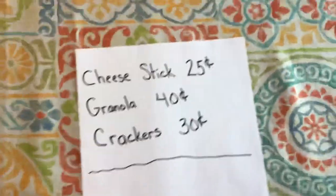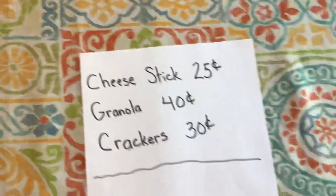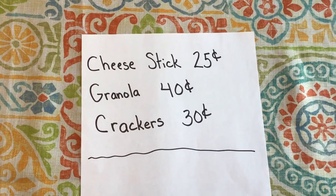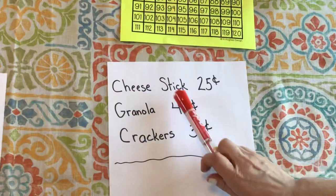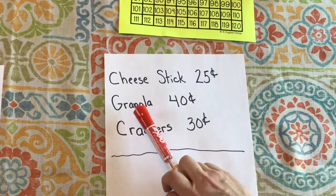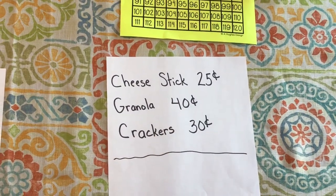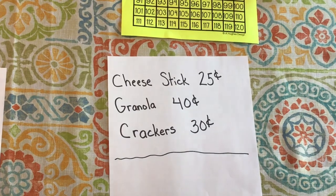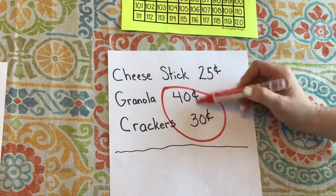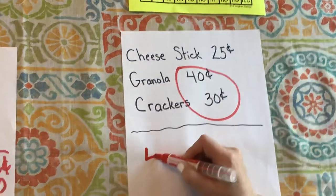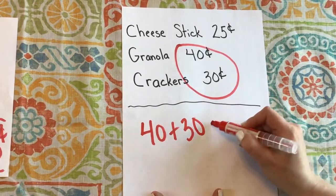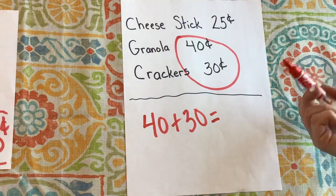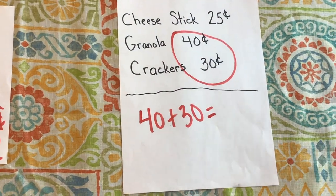For my next one, I'm going to use my hundreds chart again, and this time I'll pretend I'm buying three items from the store: the cheese stick for 25 cents, the granola bar for 40 cents, and the crackers for 30 cents. A faster way is to add the two numbers that have zero in the ones place first — 40 plus 30. I know that 4 plus 3 is 7, and 0 plus 0 is 0.